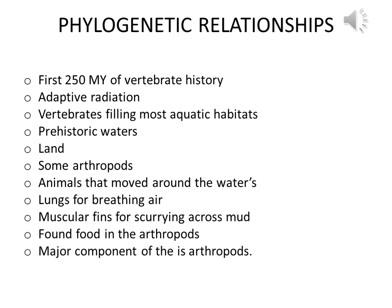Now let me discuss about the phylogenetic relationship. During the first 250 million years of vertebrate history, the adaptive radiation resulted in vertebrates filling most aquatic habitats. The early amphibians appeared in the Devonian period, which belongs to the Paleozoic era according to the geological time scale. The early amphibians appeared when fish were fully diversified, and at that time freshwater bodies were well developed, and the early amphibians also dwelt in the water.